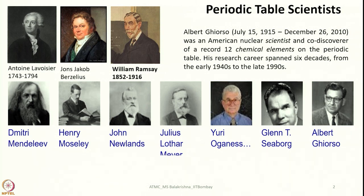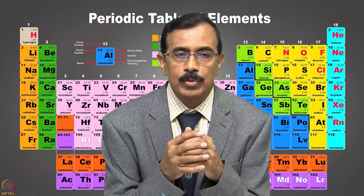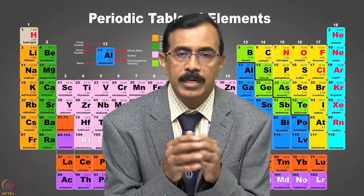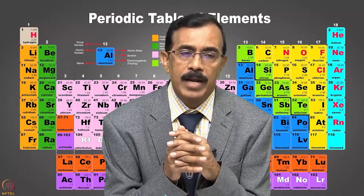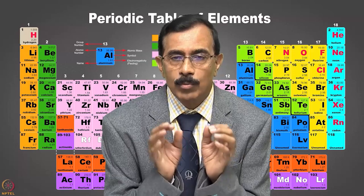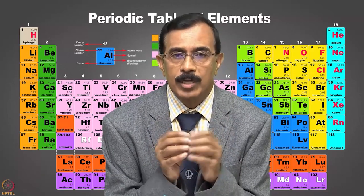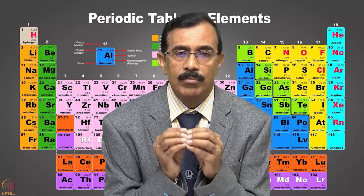Next, Mendeleev published his periodic table in 1869. Before that, the triad system came into picture, John Newlands talked about octaves, and John Jacob Berzelius named several elements and gave symbols for them. When Mendeleev published his periodic table, he stated that physical and chemical properties of elements are periodic functions of their atomic weight. Later, Henry Moseley through extensive X-ray spectroscopy determined atomic numbers, and the law was modified to periodic functions of atomic number.